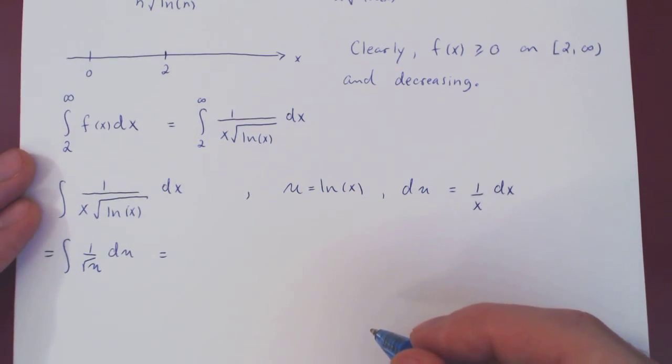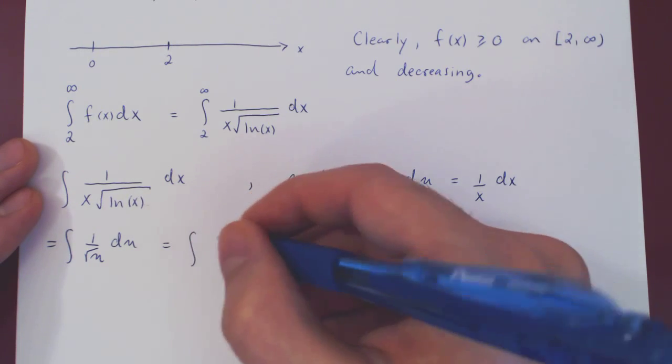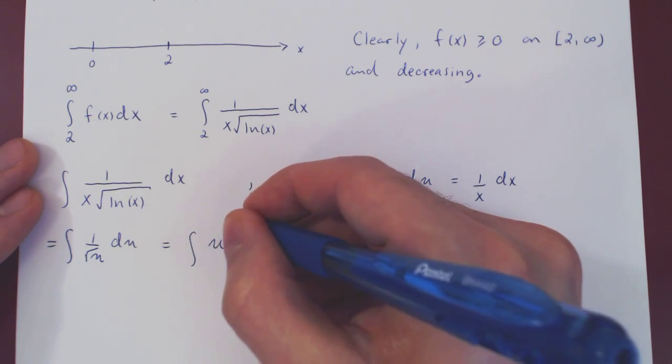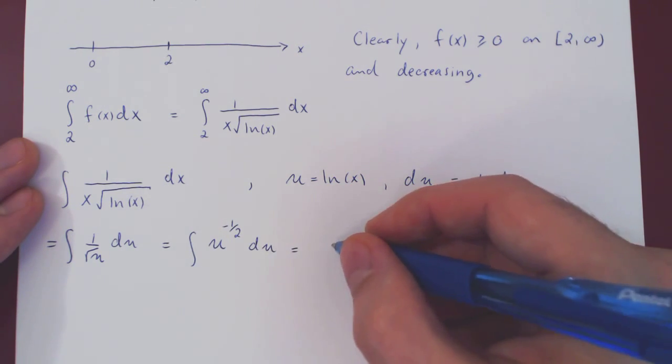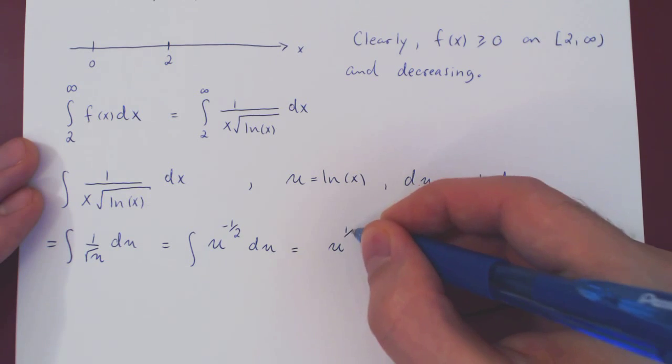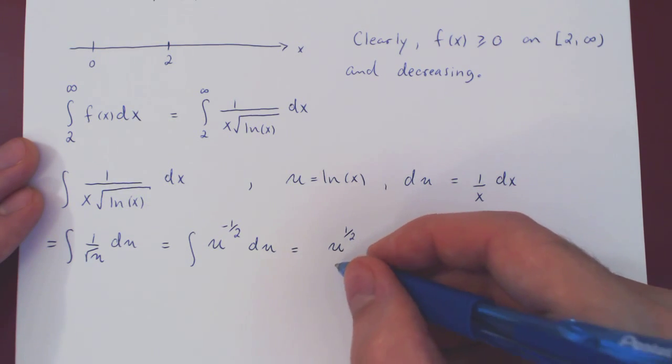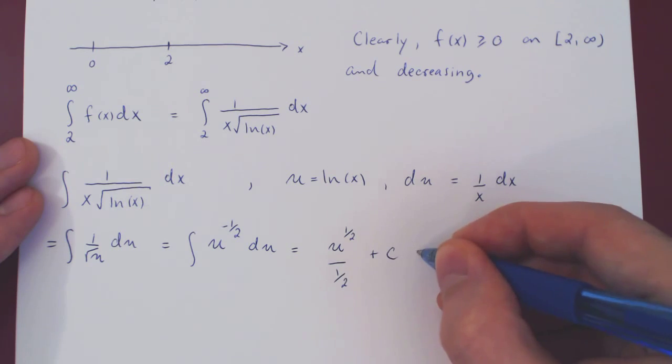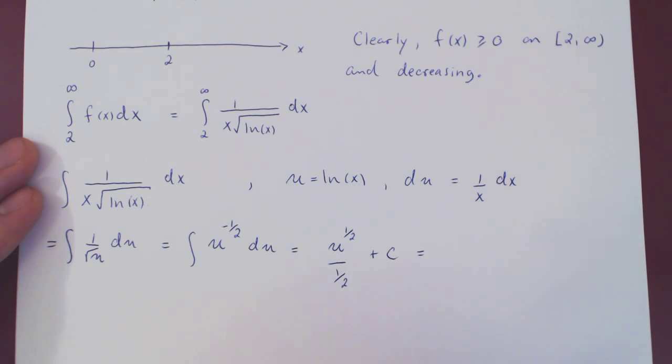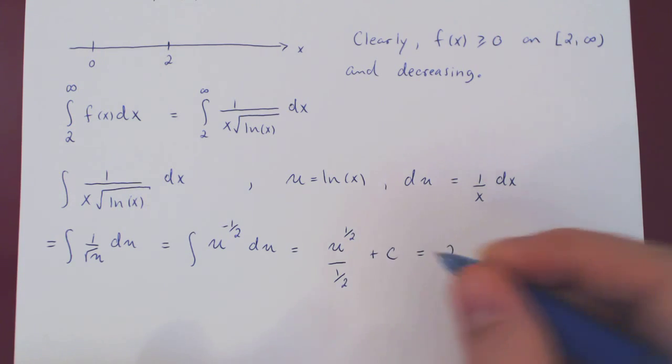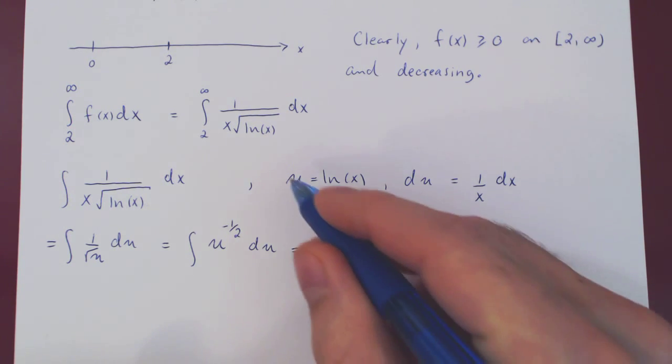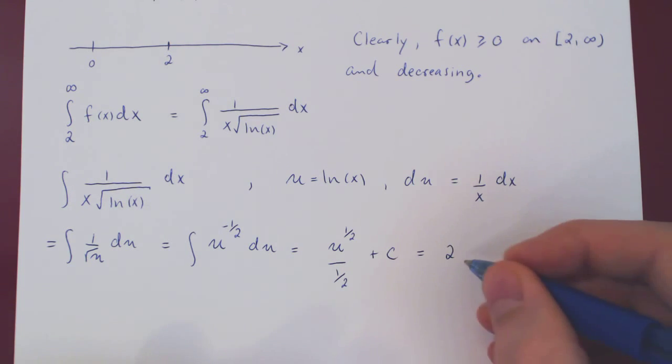And we can now use the power rule. 1 over root of u is u to the negative 1 half. Power rule, add 1 to the exponent. Get u to the 1 half. Divide by 1 half. Plus c. And I replace back in terms of x. 1 over 1 half is 2. The power of 1 half is the square root, so that's the square root of ln of x. Plus, of course, c. Now that we have our antiderivative, we can go back to the improper integral.